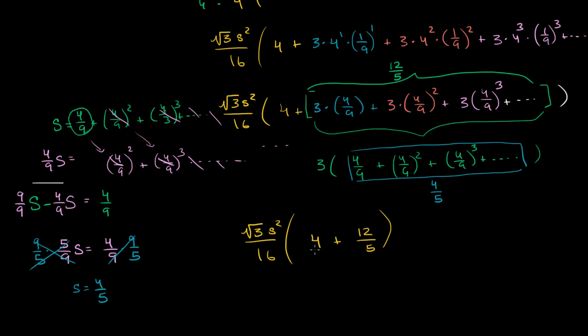Now just to add these two things, we can rewrite 4 as 20/5. Then 20/5 plus 12/5 is 32/5. So this whole thing right over here is going to be 32/5.